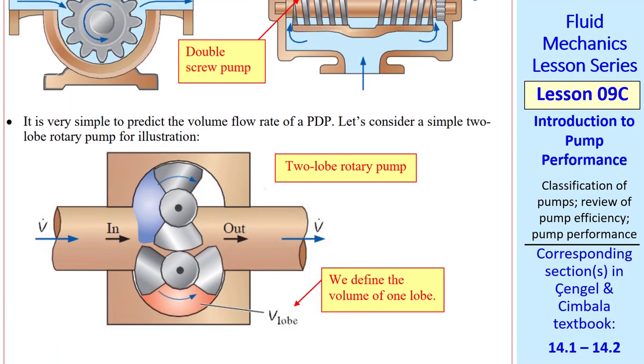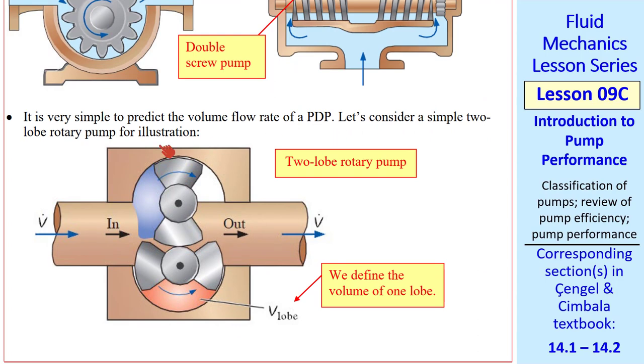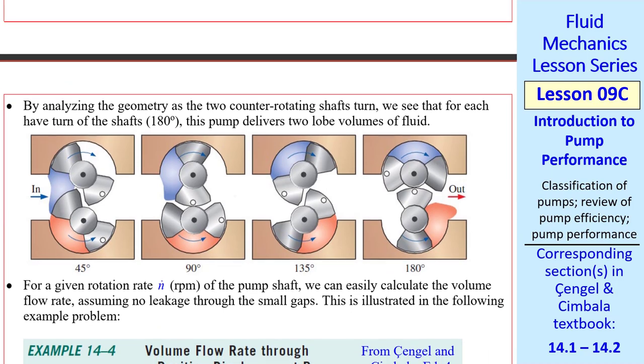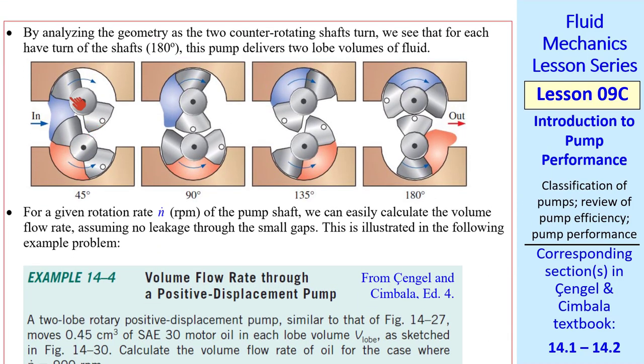It's actually very simple to predict the volume flow rate of a PDP. Let's consider a simple two-lobe rotary pump. We define the volume of one of these lobes as this pink fluid here or this blue fluid here. This part spins counterclockwise. This part spins clockwise. And we can easily analyze how this draws the fluid in and pushes it out. We drew this in our textbook to illustrate at four different angles of these rotating shafts.